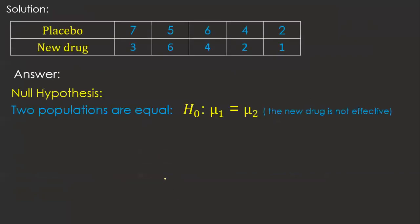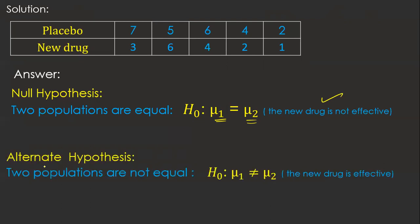First, we frame the hypothesis. Null hypothesis H0: the two populations are equal, meaning μ1 = μ2 — therefore the new drug is not effective. Alternative hypothesis H1: the two populations are not equal — therefore the new drug is effective. The level of significance is taken as α = 0.05.